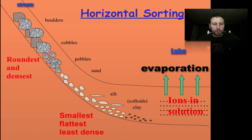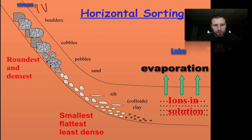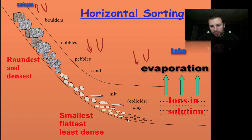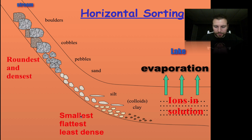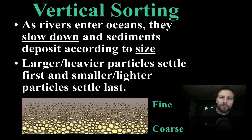Looking at horizontal sorting more closely: with increased velocity up top, all the large particles are suspended. As velocity decreases, only smaller particles are carried, and with further decreases, the smallest are carried in solution out into oceans. Also, the densest materials are deposited first, while the smallest and least dense are deposited last.